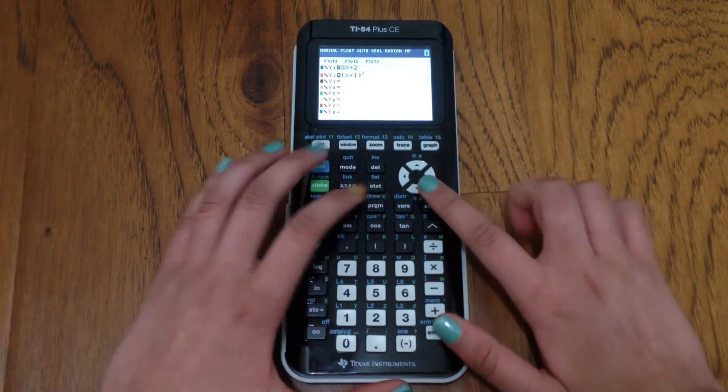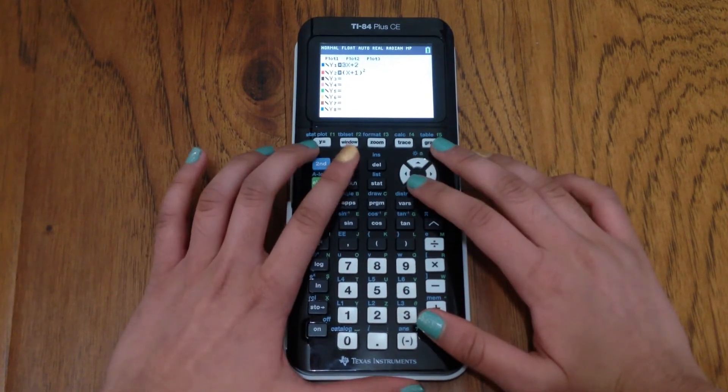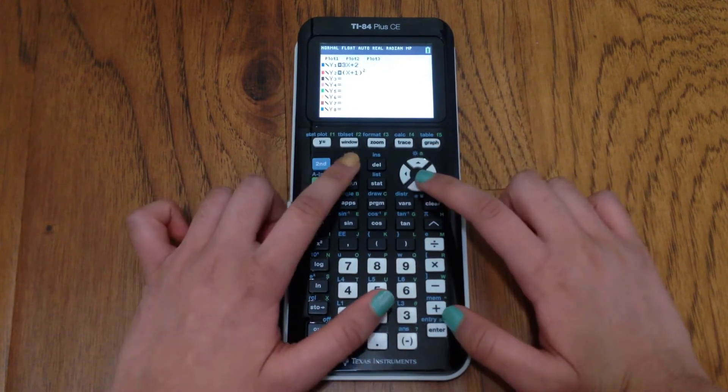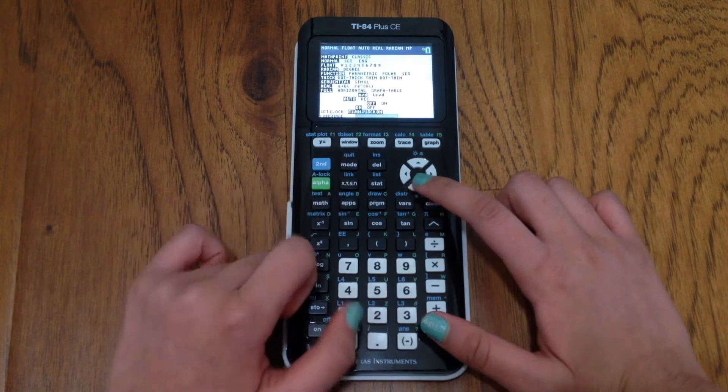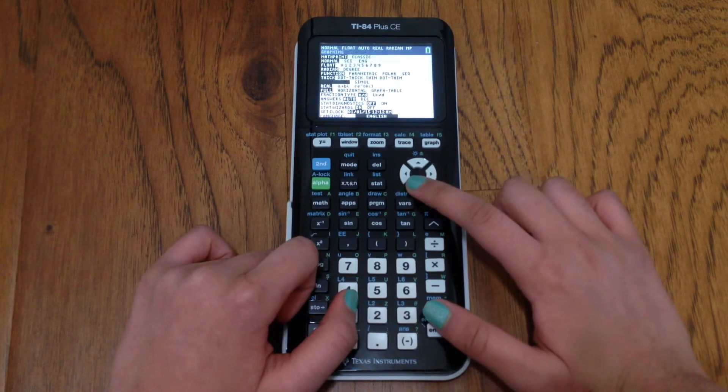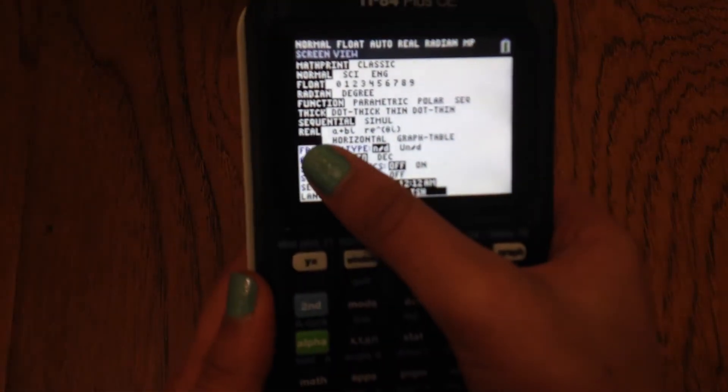Once I have that, all that's going to change is I'm going to change the mode. So I would click on the mode key, and I would scroll down to where it says right here, to where it says full,